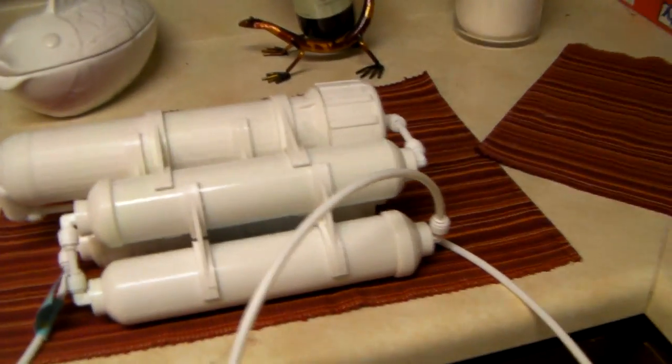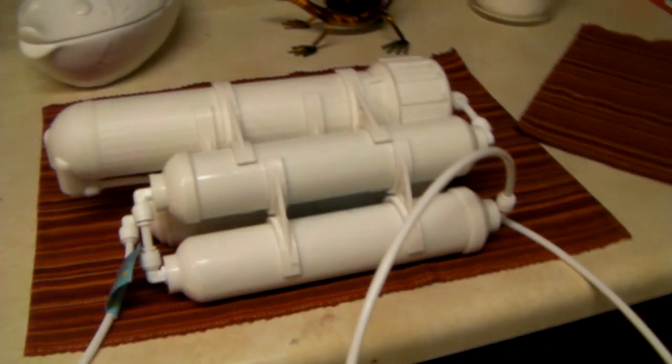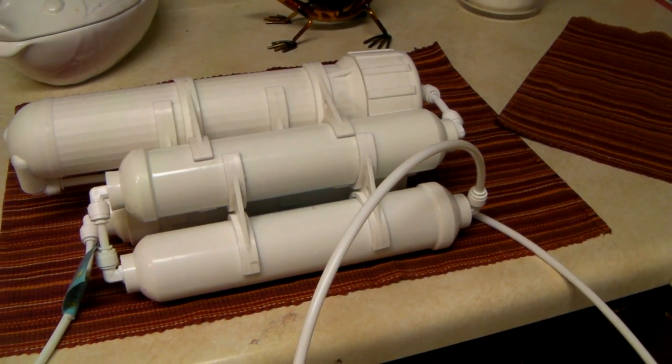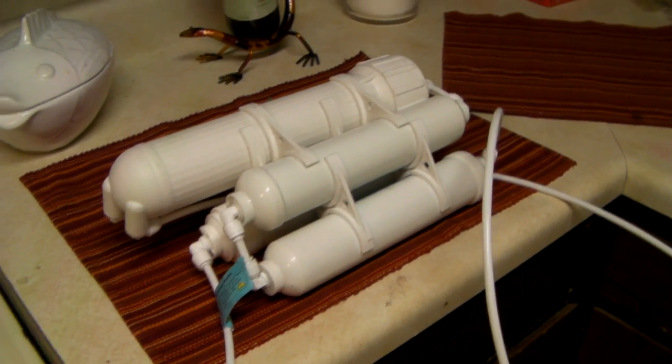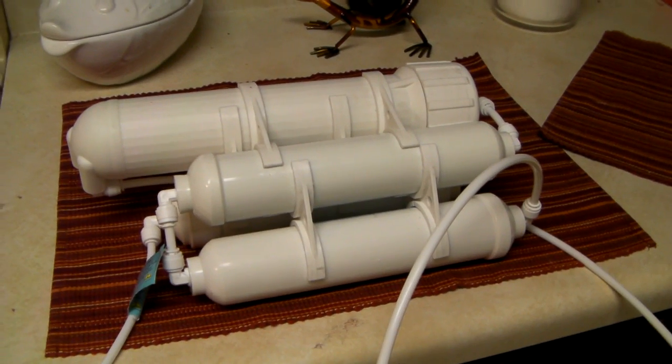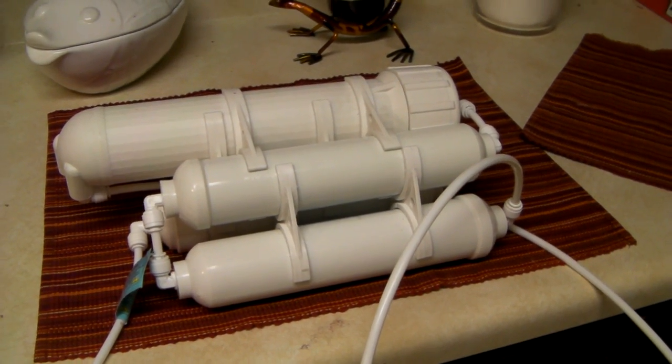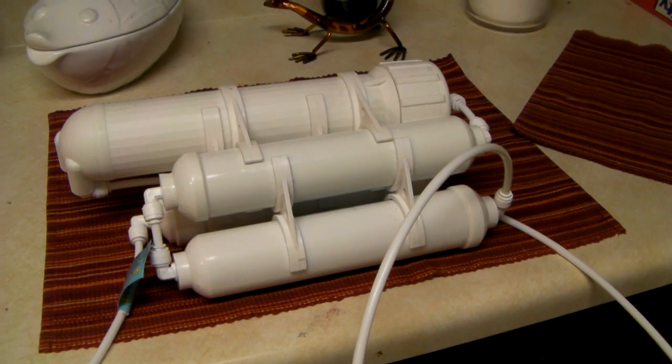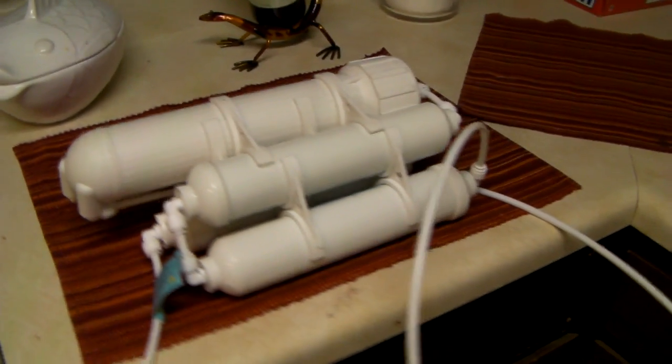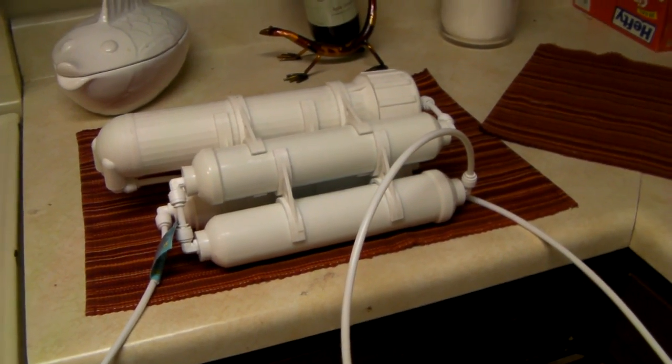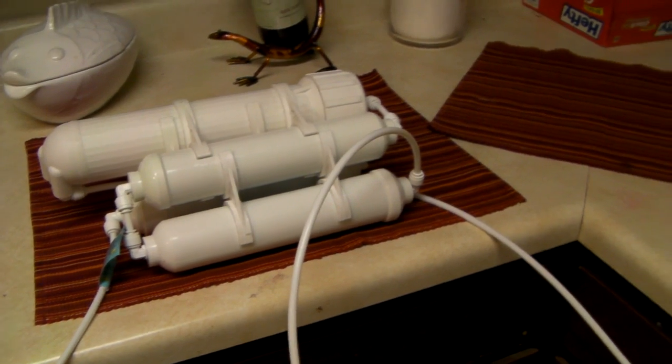So I've had this about a year. I changed the two carbon filters and the DI resin filter after about six months. I was getting about four TDS, and I replaced the three filters, left the membrane the way it is—which is the big canister you see there—and was back to zero TDS.